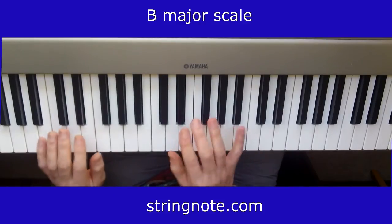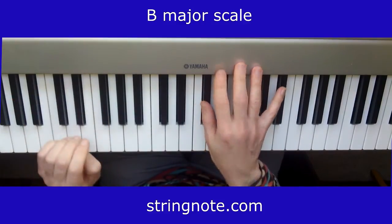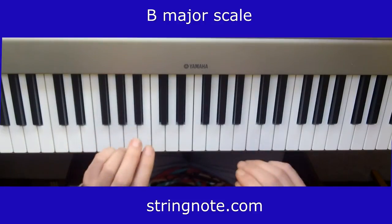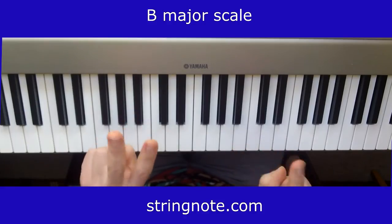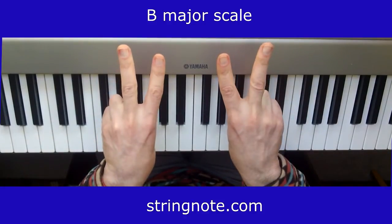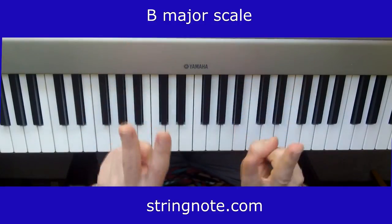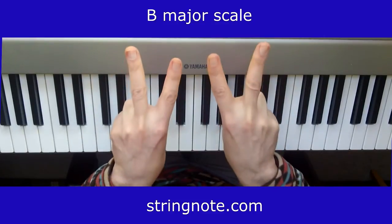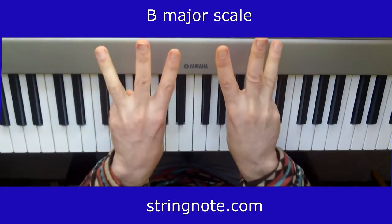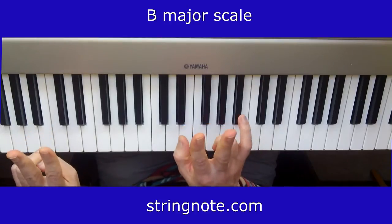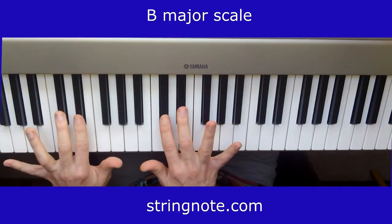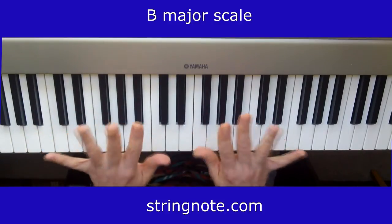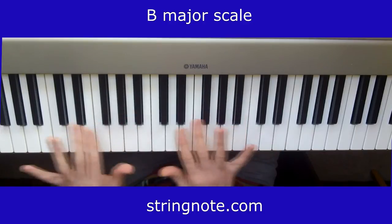When it comes to the B major scale, we have to assume with our hands this position: two, three, two, three, two, three. We're going to use finger one and two for the two black keys together, and finger one, two, and three for the three black keys together.